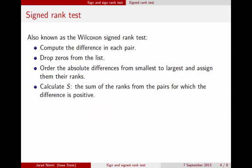Once we have that done, then we go ahead and calculate this test statistic S, which is the sum of the ranks from the pairs, that is for the observations that have the difference being positive. And now we're going to, just like we did before in the rank sum test, calculate what's the expected value of this and what's the standard deviation of this quantity.